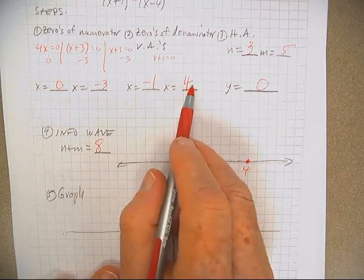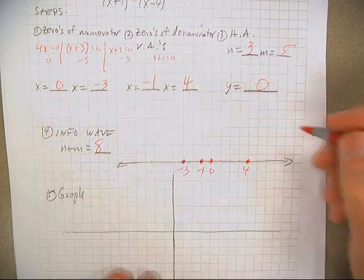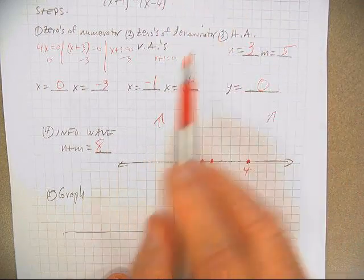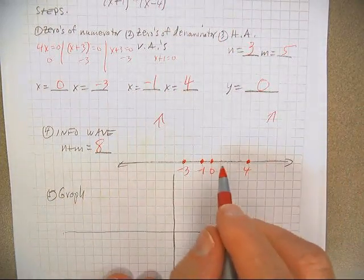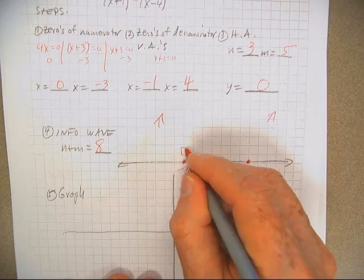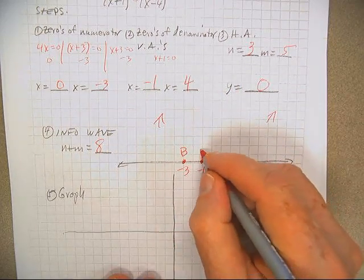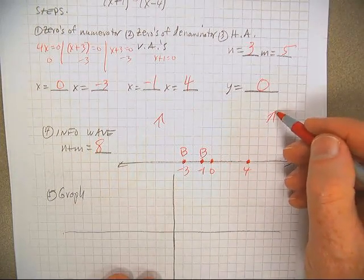And the ends are both up, and I bounce off of negative three, so I'm going to put a B to remind me to bounce. And I bounce off of negative one. I bounce off of both of those.